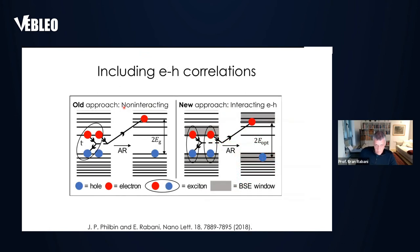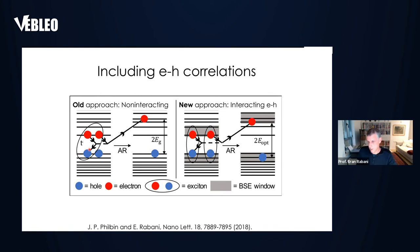The first thing we noticed is that all the old approaches used what I call a non-interacting formalism, describing the initial biexcitonic state — two electrons and two holes — as non-interacting. In the bulk, this might be a good approximation because binding energies of excitons and biexcitons are rather small. But in confined structures — particularly two-dimensional ones — these can be huge, up to an electron volt of binding energy. In confined structures, the binding energy typically increases with decreasing radius of the quantum dot.